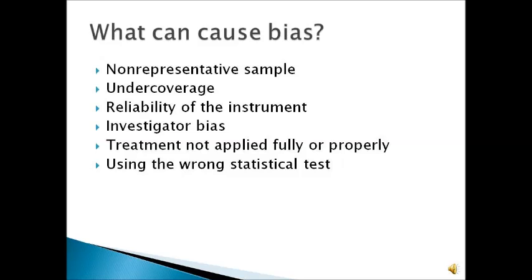Additionally, there can be investigator bias. You, as the researcher, may come to a question with preconceived ideas. If you are totally convinced that the Doritos brand has been shorting you on chips all these years, you may already believe their bags weigh less than six ounces and be desperate to prove that. In the case of an experiment, bias can be caused when a treatment is not applied fully or properly — for example, if someone supposed to take a new medication once every four hours for ten days doesn't follow through, that can bias your results.